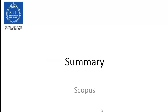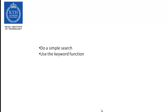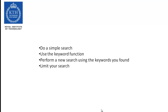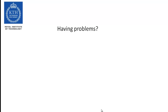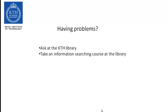Let's review our key points. When searching in Scopus, start off with a simple search using some relevant terms. Then use the Scopus keyword function to find synonyms, and use these synonyms to do a new search. Limit your search if you have to, and sort them according to your needs. This approach is better because you get more results if you want them — but more importantly, you get better results with more relevant documents. If you are having problems, ask at the KTH library for assistance or take one of our information searching courses. Please visit our homepage for more information.